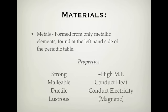Being ductile means they can be drawn into wires — very similar to malleability, where they can be drawn out into a long thin wire. Lustrous means things are shiny, and metals are definitely lustrous. In general, metals have a relatively high melting point — though some don't, like mercury whose melting point is below room temperature, and gallium which melts at just above room temperature at about 27 degrees. But most metals generally have a high melting point.